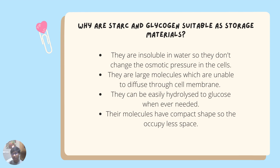Starch and glycogen are suitable as storage materials for several reasons. They are insoluble in water, so they don't change the osmotic pressure in cells. They are large molecules unable to diffuse through the cell membrane, so they can easily be stored — unlike glucose, which can easily diffuse out. They can also be readily hydrolyzed back to glucose whenever needed. Finally, they are compact molecules, so they occupy less space; 100 glucose molecules scattered in a cell would occupy far more space than the equivalent compact storage molecule.